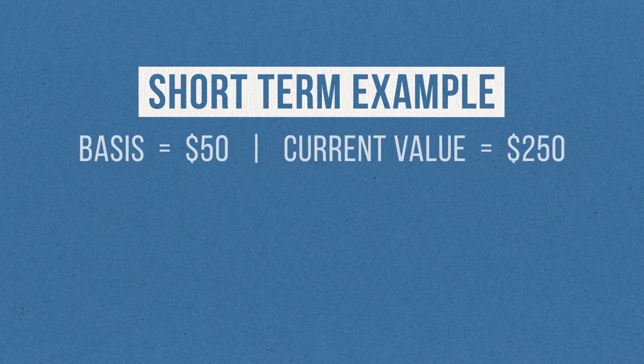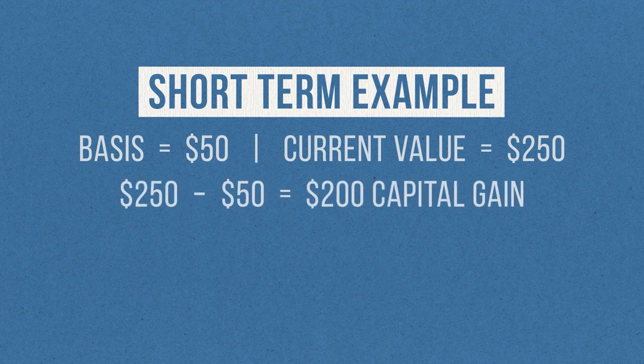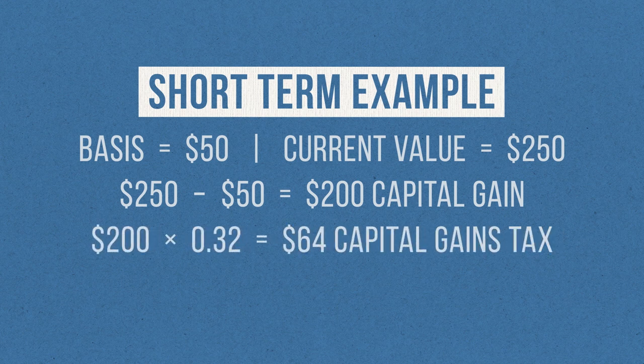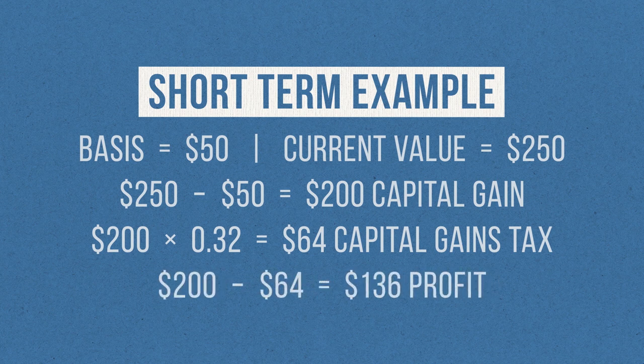Your short-term capital gains tax rate is equal to your regular federal income tax rate. So if you're in the 32% tax bracket, your short-term capital gains are getting taxed at 32%. For example, let's say I bought some Tesla stock six months ago for $50. Tesla has really been shooting up in value lately, and now my stock is valued at $250. I decide it's time to sell and realize my gain of $200. Because I've only owned that stock for six months, I'm going to have to pay short-term capital gains tax on my profits. I'm in the 32% federal income tax bracket, so my short-term capital gains tax rate is 32%. When I take 32% of $200, I get $64 in capital gains tax. So my actual profit after paying the capital gains tax would be just $136.